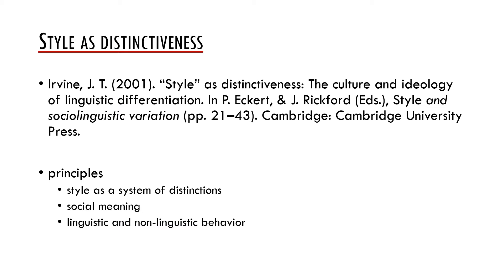During the last 20 years, style became the crucial concept in variationist sociolinguistics. For example, Judith Irvine understands style as a system of distinctions, as a way to differentiate oneself in a certain social space. A related concept is social meaning, which is communicated through style. Linguistic differences such as variants of a certain variable are linked to certain social meanings, and by the use of these variants we communicate the given social meanings.